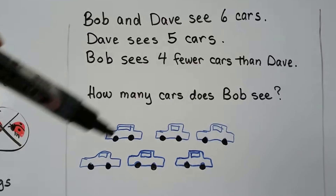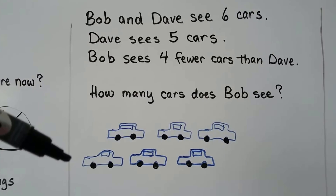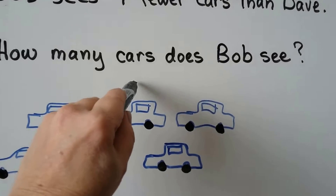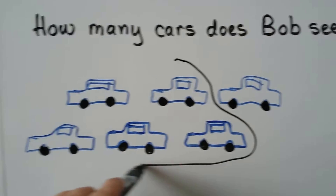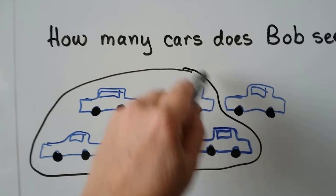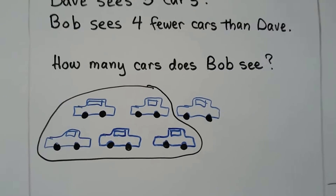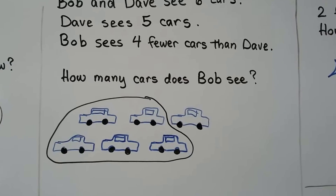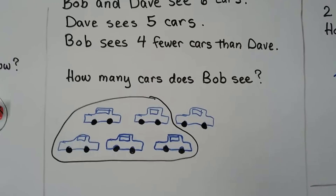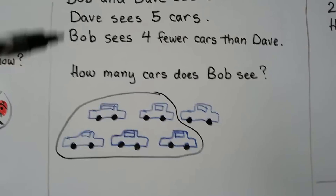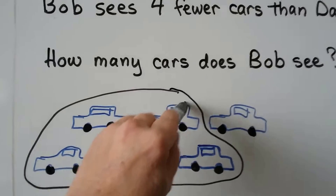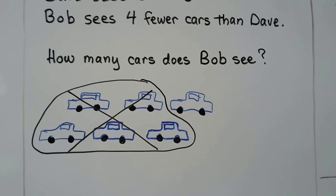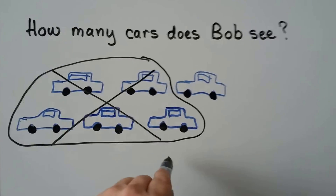There are six cars — one, two, three, four, five, six. Dave sees five. If we circle the five that Dave sees, we'll know how many are left over that Bob sees. There's only one car left. We circled the ones that Dave saw and we can cross them out because those are the ones Dave saw — we want to know what Bob saw. There's one car.